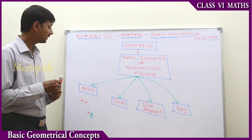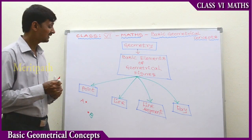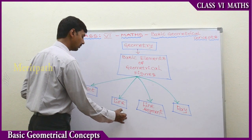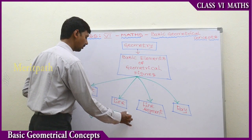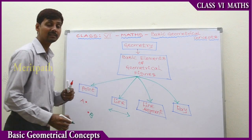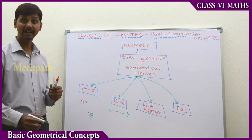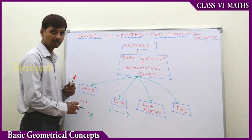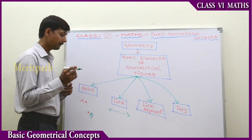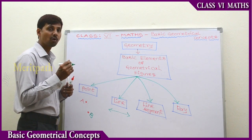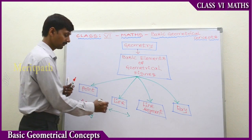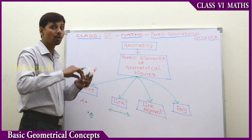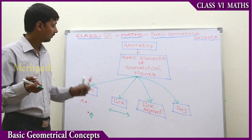A line is a set of points along a straight path that extends endlessly in both directions. We have a point — a dot is called a point. The set of points on a straight path extending endlessly in both directions forms a line.